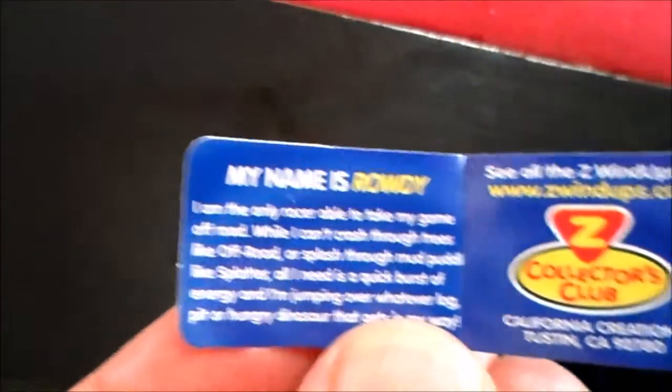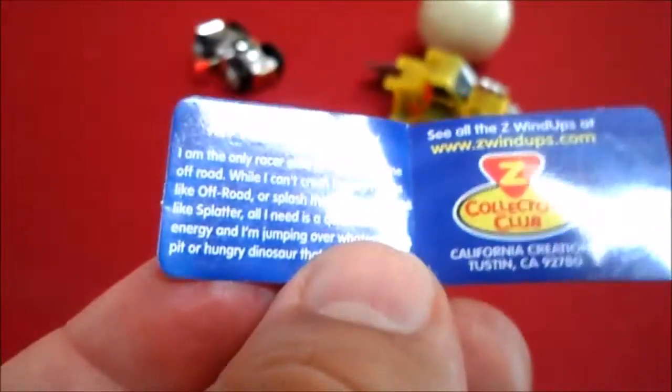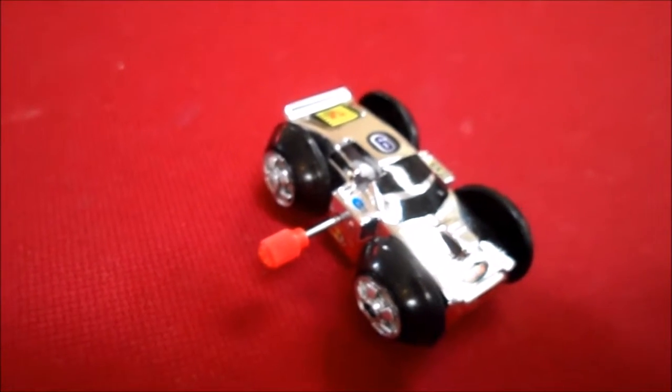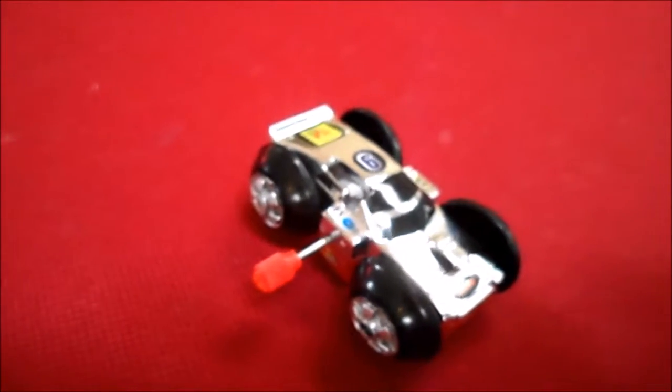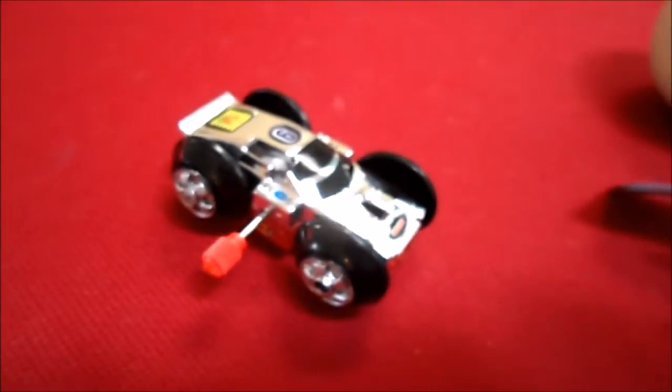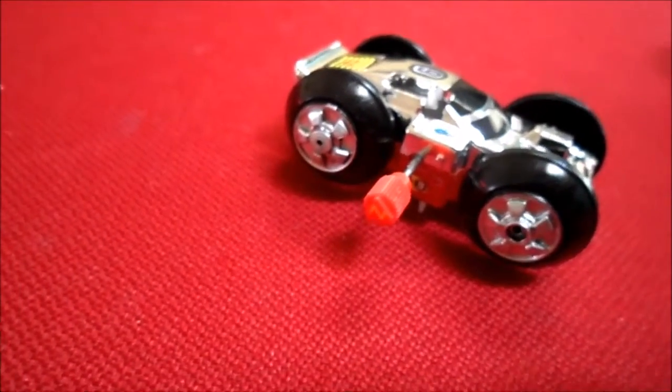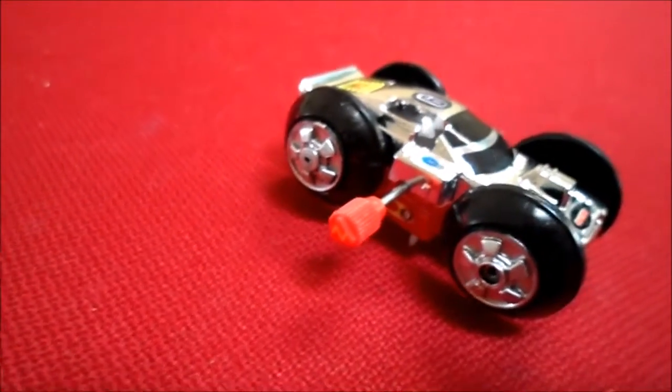Lots of different versions of them. First one we're going to have a look at is Rowdy. Yeah, I am the only racer available to take my game off-road. Well, I can't crash through trees like Off-Road or splash through muddy puddles like Splatter. All I need is a quick burst of energy. I'm jumping over whatever log, pit, or hungry dinosaur gets in my way.